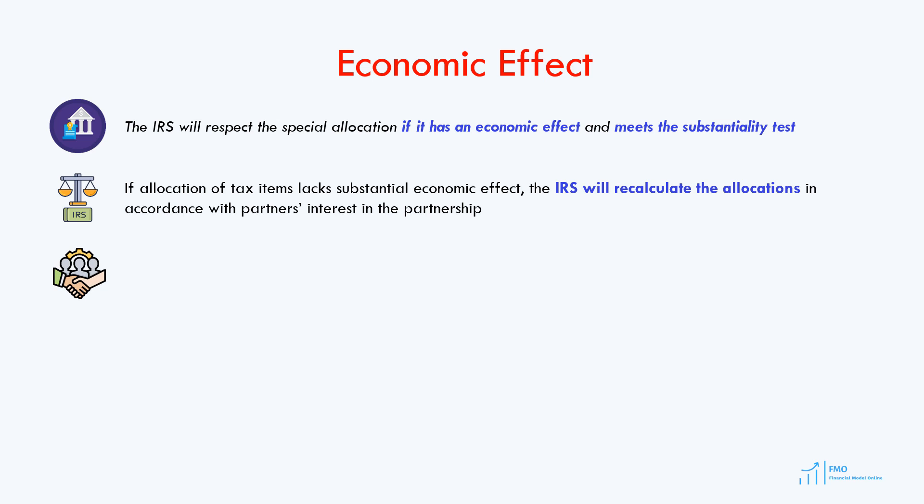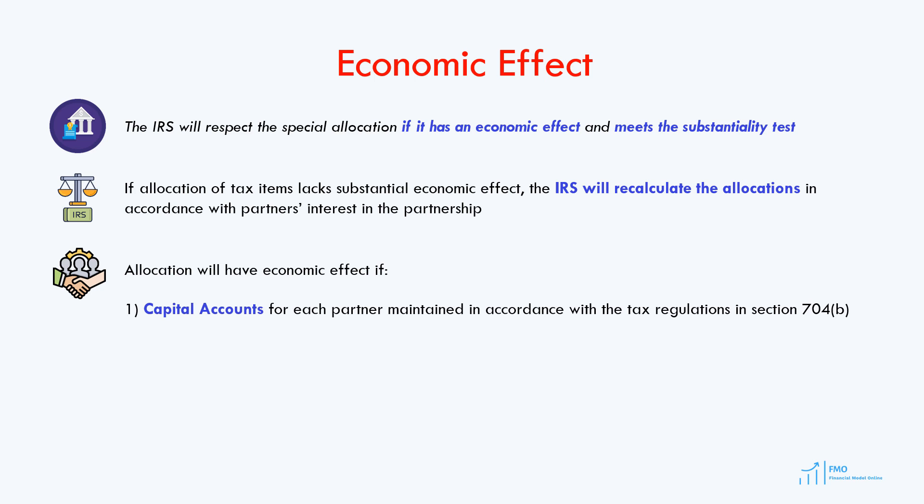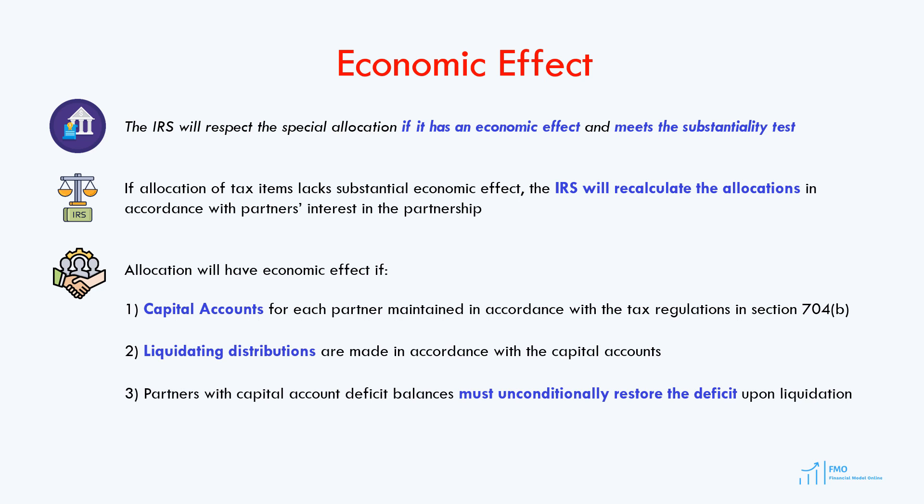The allocation is deemed to have an economic effect if: number 1, the capital account for each partner is maintained in accordance with Section 704B of the tax code, which provides detailed instruction on the capital accounts. Number 2, the liquidating distributions have to be made in accordance with the capital accounts. Number 3, the partner with the deficit in his capital account must restore that deficit upon the partnership liquidation.